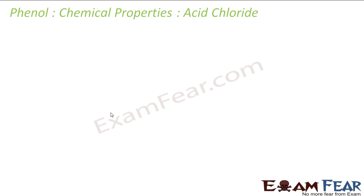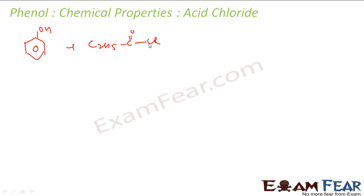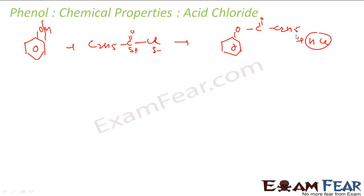Now the acid chloride reaction. Phenol (OH) reacts with C2H5COCl. Chlorine is highly electronegative so it gets a slightly negative charge, leaving a slightly positive charge on the carbon. This bond breaks, and what you get is phenyl ethanoate (O-CO-C2H5) and HCl. This is a nucleophilic reaction.